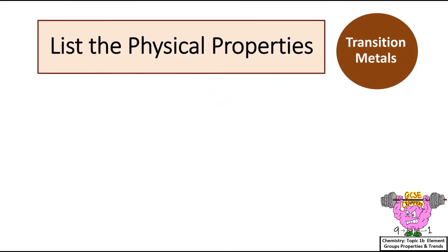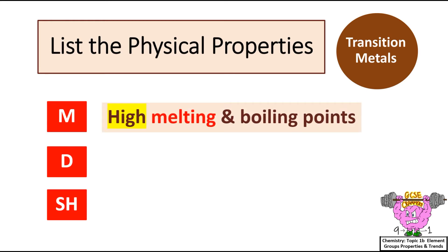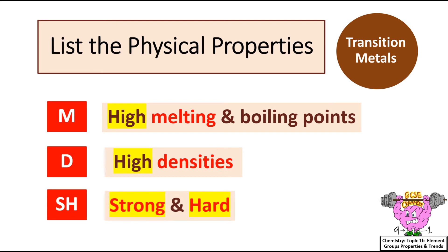List the physical properties of transition metal elements. I remember these by using the acronym MDSH, or the mnemonic MY DAD'S SHOCKING! M for melting point, D for density, and SH for strong, soft or hard. Transition metals have high melting and boiling points, high densities, and are strong and hard.